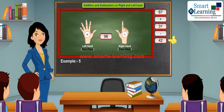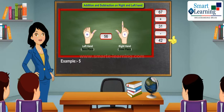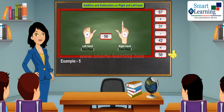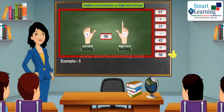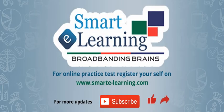In order to subtract 42, put down 2 fingers on your right hand and 4 fingers on the tens place. Read the number. Your answer is 56.